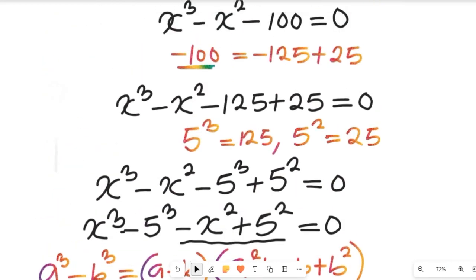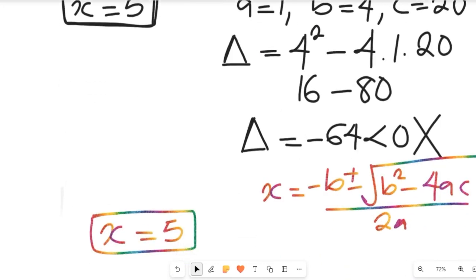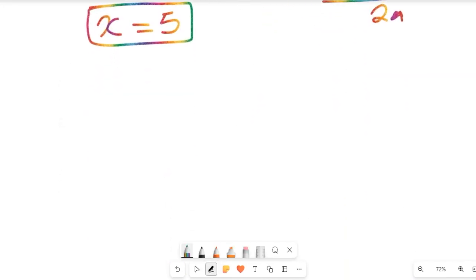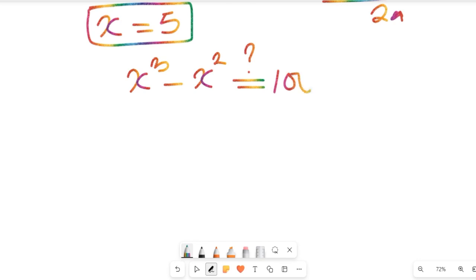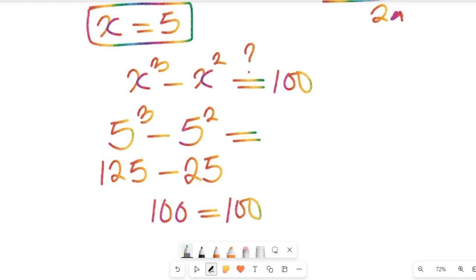Let's verify by substituting x equals 5 into the original equation: x³ minus x² should equal 100. We compute 5 to the power of 3 minus 5 to the power of 2, which is 125 minus 25, giving us 100. Since 100 equals 100, this confirms x equals 5 is correct.